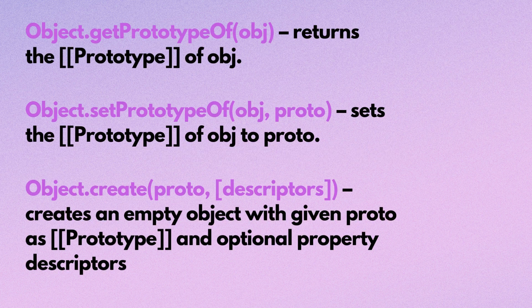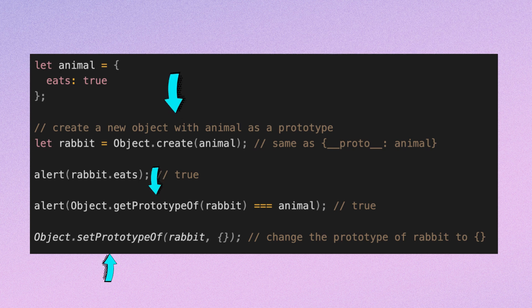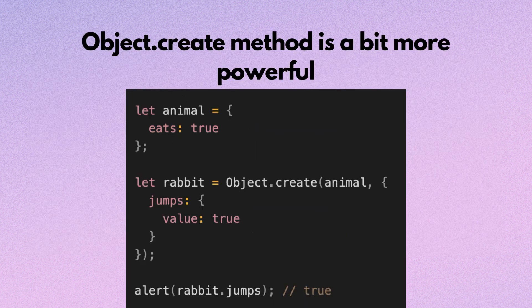Let's consider modern methods to set up a prototype. Object.getPrototypeOf returns the prototype of an object. Object.setPrototypeOf sets the prototype of an object to proto. Object.create creates an empty object with a given proto as its prototype and optional property descriptors. The Object.create method is a bit more powerful, as it has an optional second argument for property descriptors — we can provide additional properties to the new object like this.